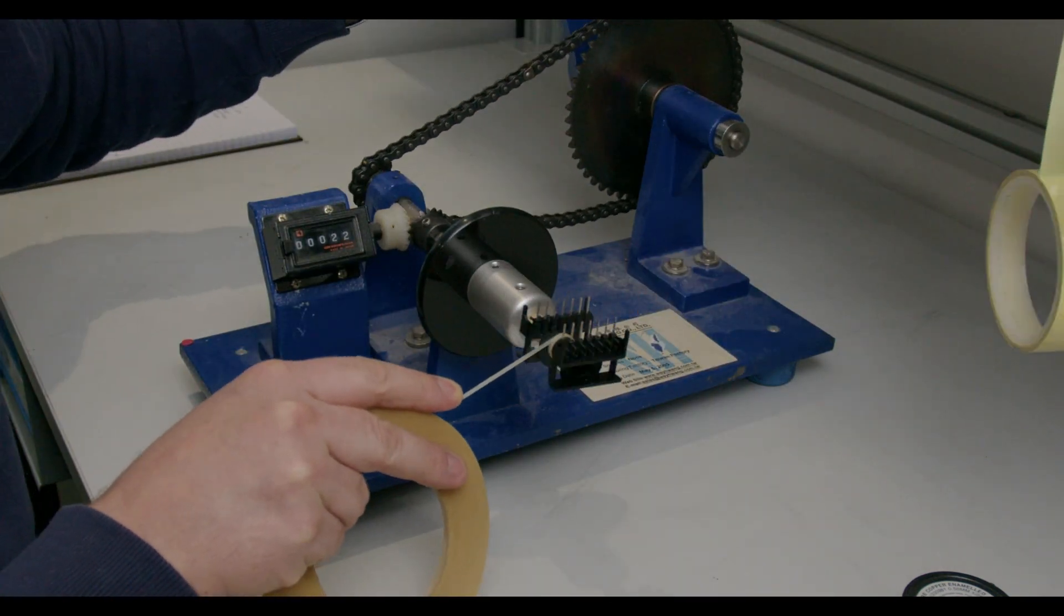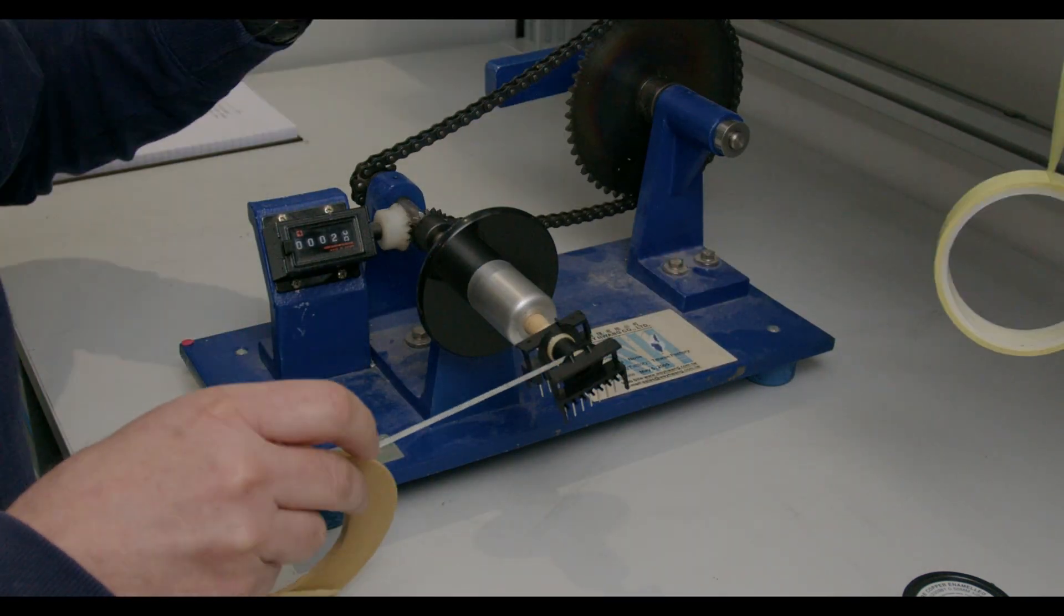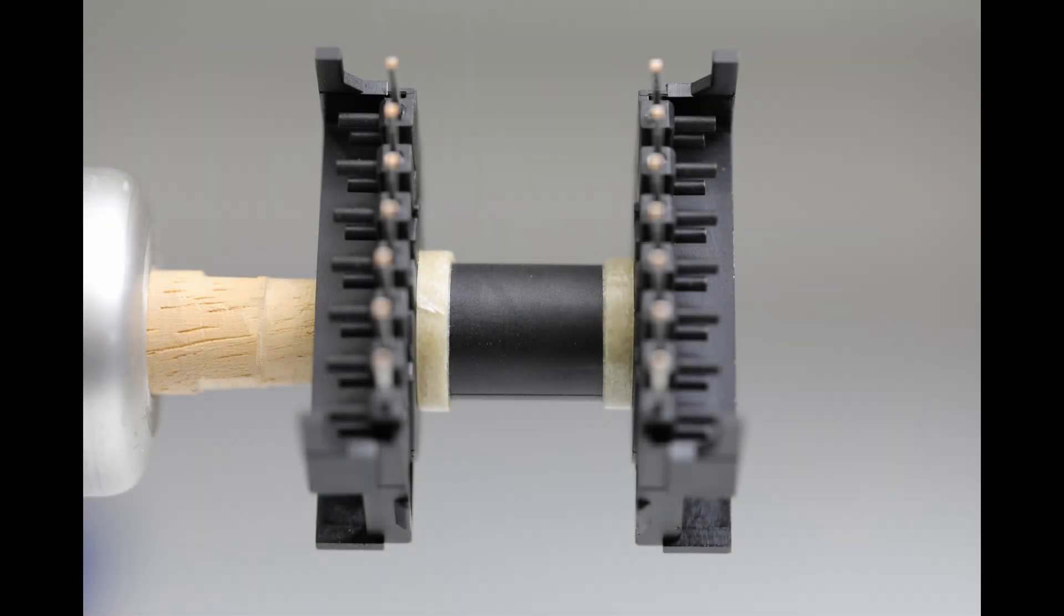Firstly we add margin tape to either side of the bare bobbin. This ensures that when we add the windings we maintain six millimeter creepage between primary and secondary.